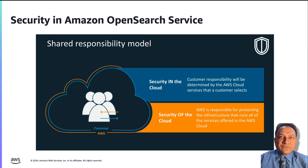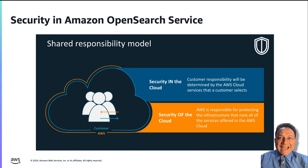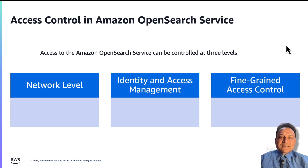Security of the Amazon OpenSearch Service follows the shared responsibility model, like any managed database or data store on AWS. AWS is responsible for the security of the underlying infrastructure on which the Amazon OpenSearch Service clusters run and the physical security of the data storage layer. The customer has responsibility for controlling access to the clusters and protecting any data in transit and at rest. Controlling access can be thought of at three levels.